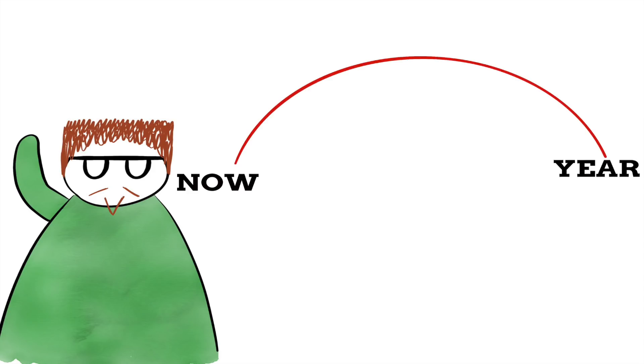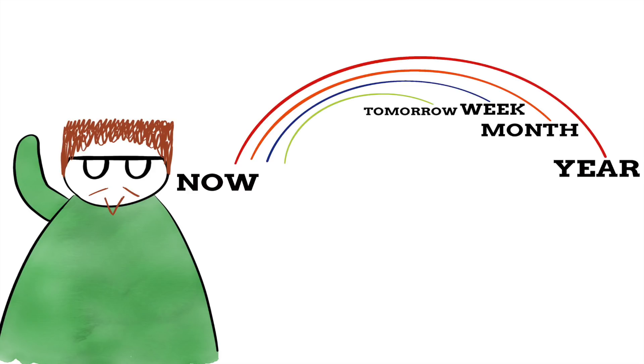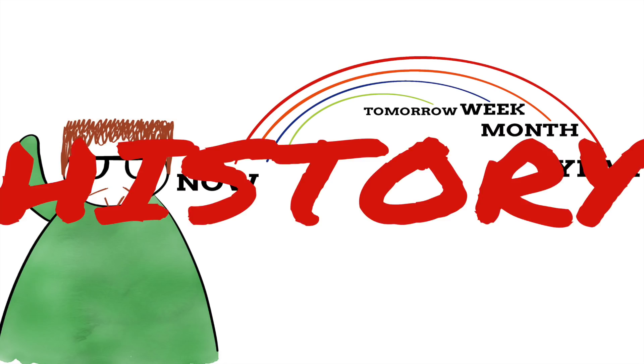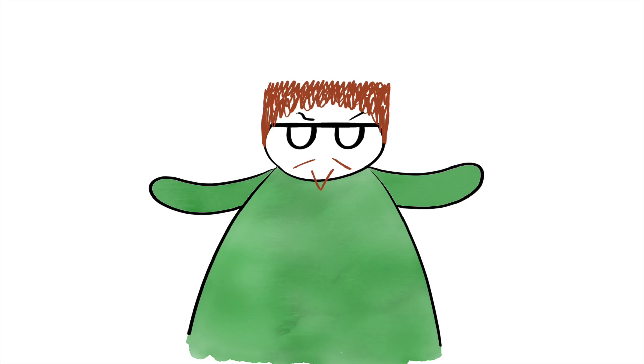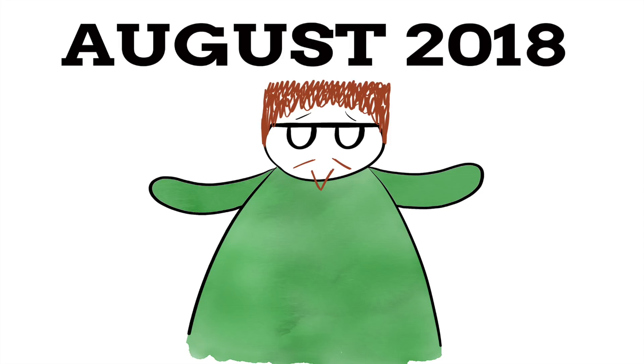What about now? Right now, watching this video might just seem like another instance of us going through time, but by next year, next month, next week, even by tomorrow, this will just be another instance of history. So what should we call this instance in time and history? By this instance in time, I mean August 2018.